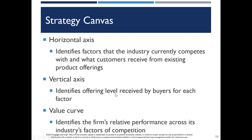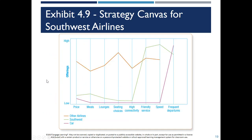The strategy canvas leads you back to a competitive analysis, where you can basically plot what you do and what your competitors do to get a graphical look at how you are the same and how you are different. Here's a good example: Southwest Airlines is the green line, and this shows you what degree of offerings they provide in each category. Their price is low compared to other airlines, meals are not very elaborate, and they don't really do lounges — so there's a big gap there.